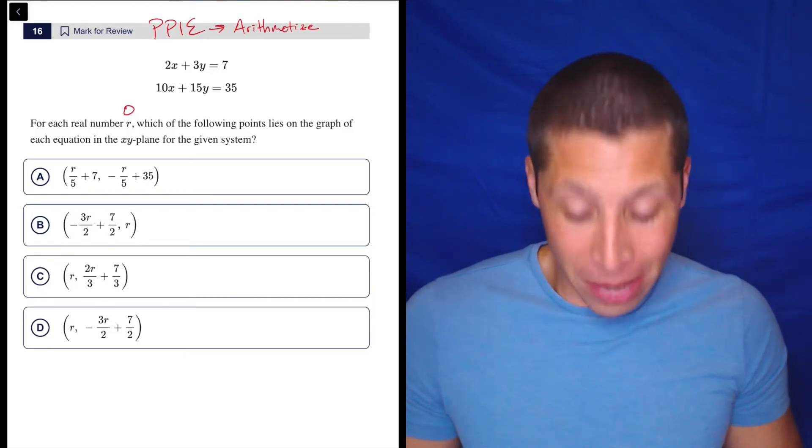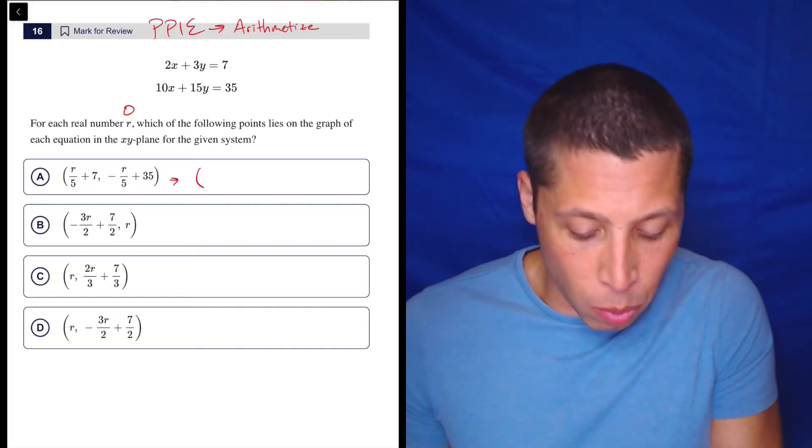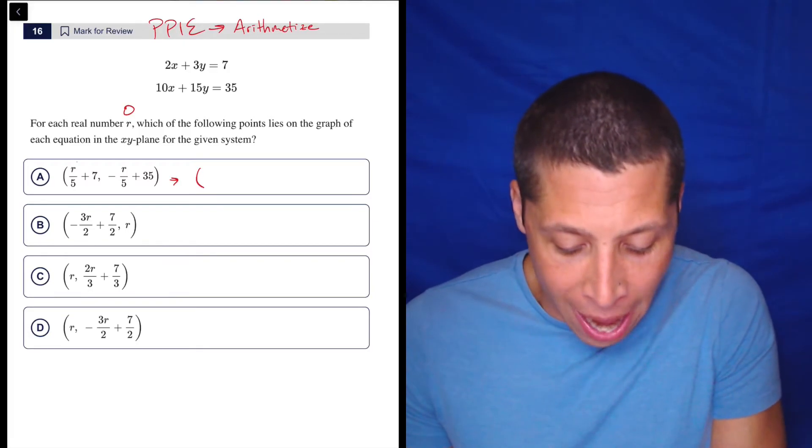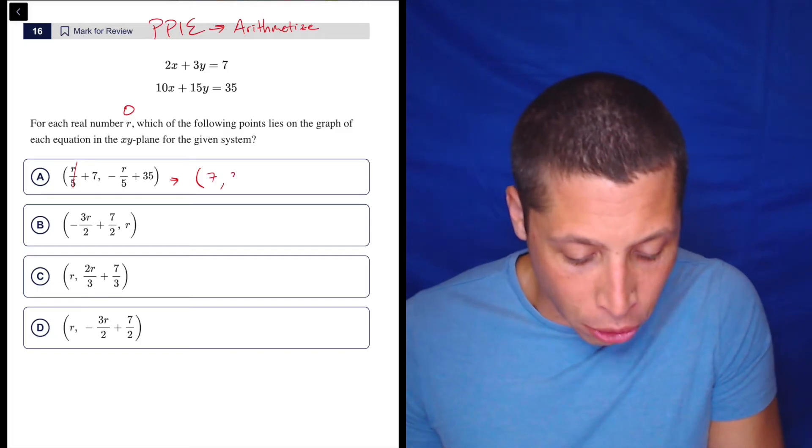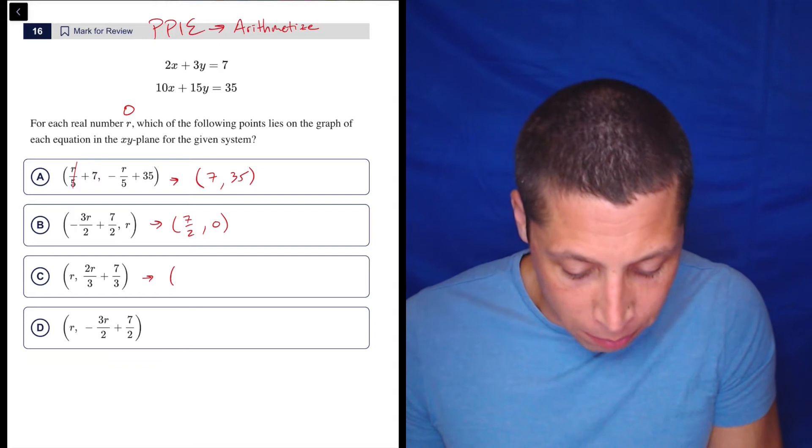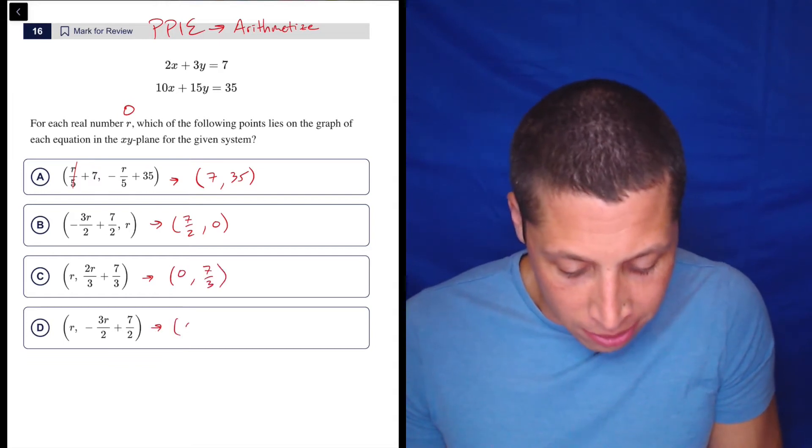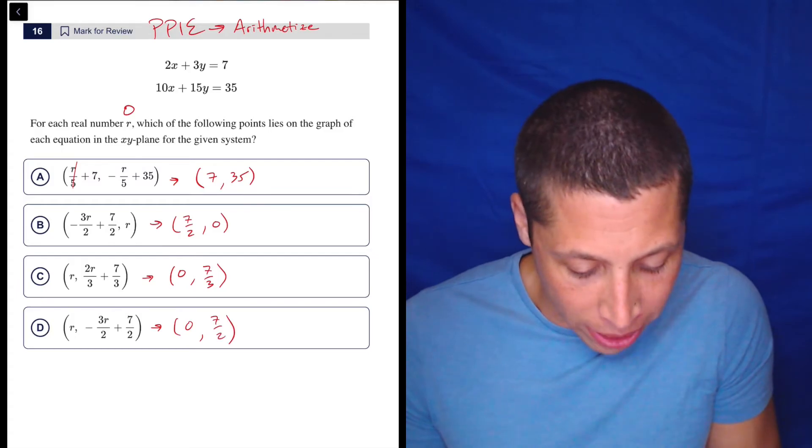Let's see what happens if we make it zero. Then these points become much simpler. This one, the zero is going to knock this whole piece out here. So we're going to have seven and then 35.5. This one would be zero plus seven halves, so seven halves, comma zero. This one is going to be zero seven thirds, and this one is going to be zero seven halves.